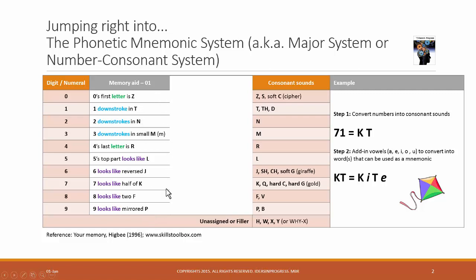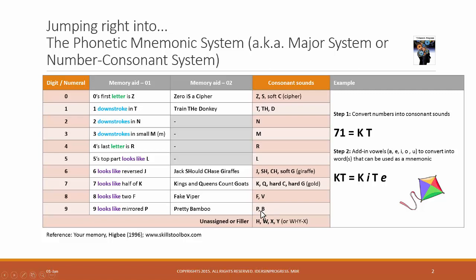9 looks like mirrored P. So this is the first set of connections to know what is the first consonant sound that is associated with the digit. But you might have noticed that for some digits, let's take digit 9 for example, there are two consonant sounds associated with it. So we already have set the connection between 9 and P, that 9 is the mirror of P. So now how to establish the connection with B?